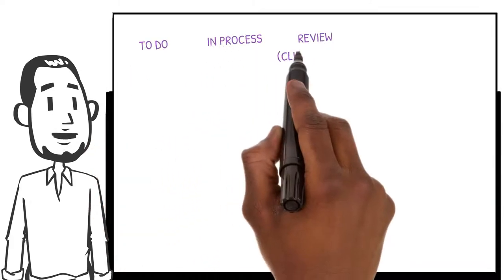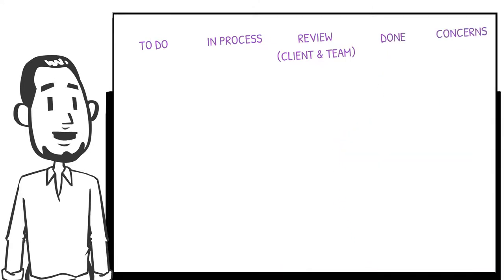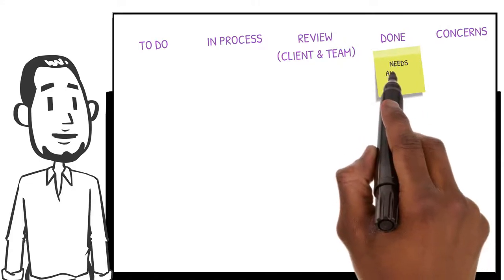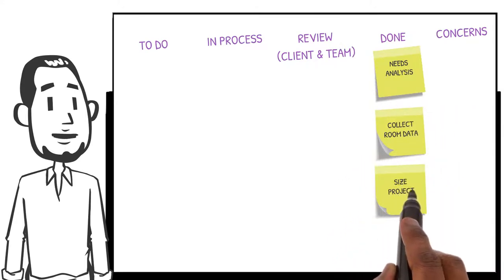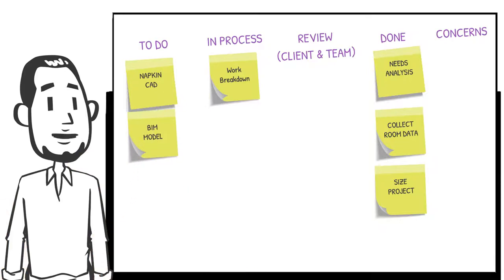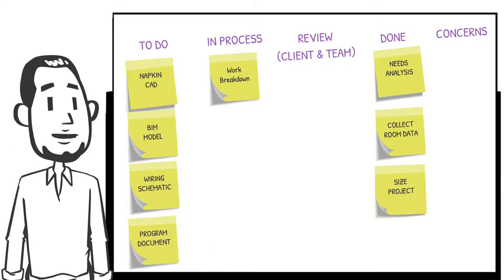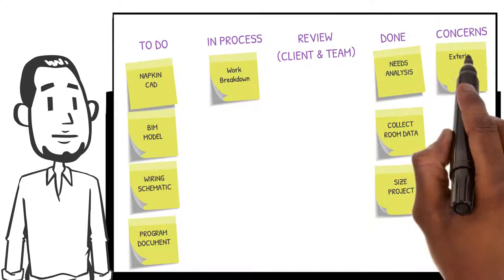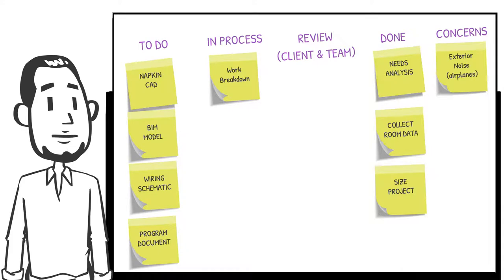I'm going to work on just planning my design tasks, not the entire project. I want to break down my tasks and share with others so there is no confusion in what I'm doing and to improve collaboration with both my team and the client. On the done side: needs analysis, room data collection, and sizing the project. In process: this work breakdown. On my to-do list: a handwritten sketch of the design — my napkin CAD. Remaining to-dos are stories that will have multiple tasks associated with them: creating the Revit model of the space, a simplified wiring schematic, and ultimately the program document, which will include a narrative of the design scope and room functionality. I'm also always trying to document my concerns in writing — anything I think is overlooked or not discussed, I'll write down to refer to later.